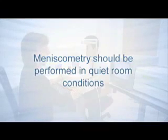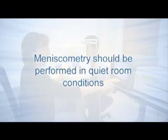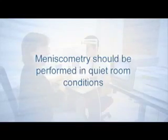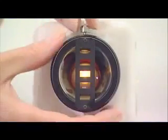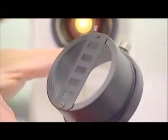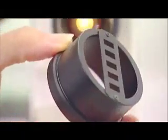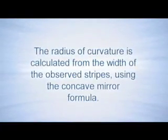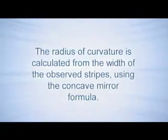Meniscometry should be performed in quiet room conditions. With this technique, an illuminated black and white horizontally striped target is projected onto the lower central tear meniscus, and the real-time reflected image is viewed coaxially and captured for analysis. The radius of curvature is calculated from the width of the observed stripes using the concave mirror formula.